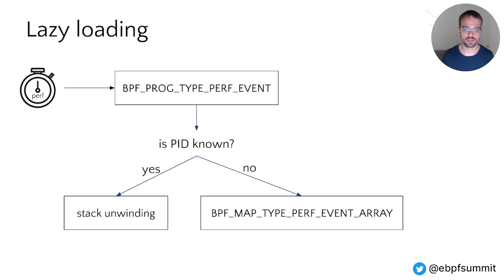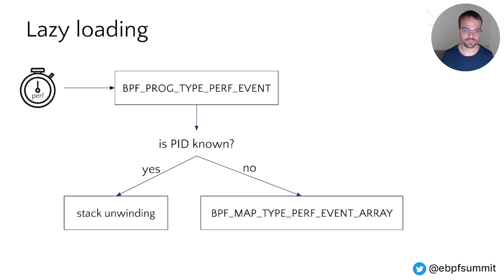Every 50 milliseconds an eBPF program is called. This program then checks if the process to unwind is known or new. If the process is known, the eBPF program will do a tail call to continue stack unwinding. If the process is not known, the eBPF program will inform the user space via the perf event array map. The user space component then populates eBPF maps with information about this process.